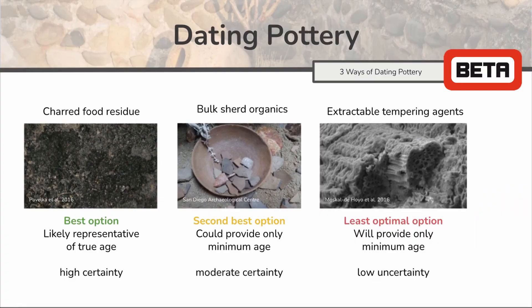There are three main portions of pottery you may date, as shown here. First is the charred food residue present on the interior surfaces of the pottery. This is the preferred portion to date as it offers the best chance of providing a date that aligns with the last time of use. The larger the food residue, the better. Ideally the lab would be able to extract chunks of food rather than just the powder.